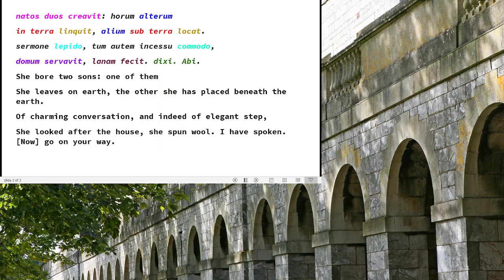Then we go back to the first person singular, 'dixi' — I have spoken — a nice little perfect; in other words, everything's finished, the 'I' being the eulogy, the gravestone. And then another imperative from 'eo,' I go, with 'ab' in front meaning away — so 'abi,' go away. That's another command. A very short command at the end, as promised in the opening lines of this piece.